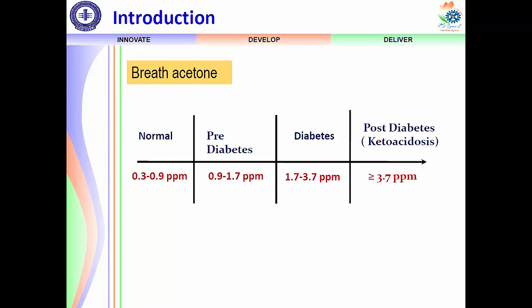These values are taken from literature and there are deviations — consider them as guidelines, not hard rules. Approximately up to 1 ppm is a healthy person, 0.9 to around 2 ppm is pre-diabetic, and 2 to at least 4 ppm is diabetic. So there are different stages: pre-diabetic, diabetic, and post-ketosis, which is called post-diabetic.